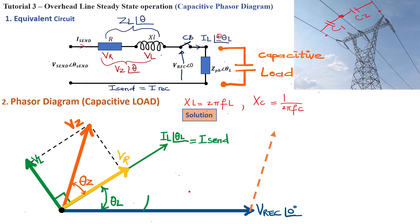Now, even without drawing the angle of V-sending, θ-sending, we can already make a projection where V-sending is going to end. It's going to end there, and that will already determine the angle θ-send. So this here will be V-sending, basically the sending end voltage.